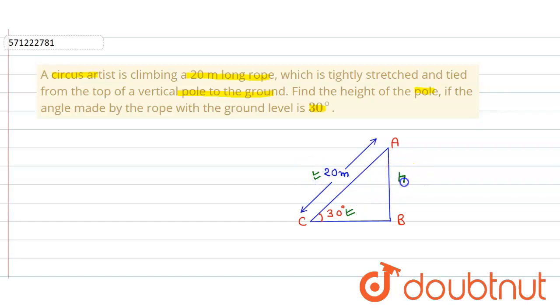So let that to be h meters. Let the height of pole be h meters. Now in right angle triangle ABC, we apply the sine identity.